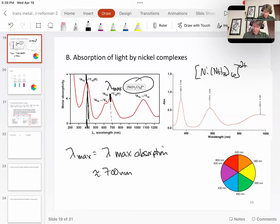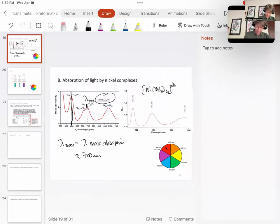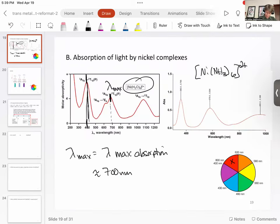And 700 nanometers is somewhere in here, so it absorbed red, so it appears green. And this is true if you ever see nickel chloride or something—the chloride is the counter ion—nickel H2O6 would be the transition metal complex, it does appear green.